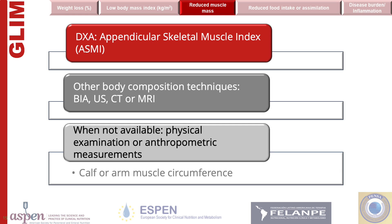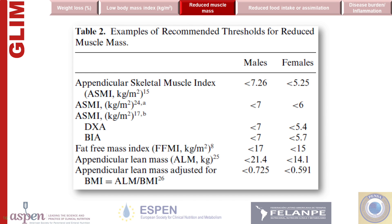Reduced muscle mass is the final phenotypic criteria. This can be measured in a variety of ways including physical exam, calf or arm circumference, BIA, CT, ultrasound or MRI, and DEXA. A variety of cut points from the literature have been suggested when using these criteria to determine reduced muscle mass.